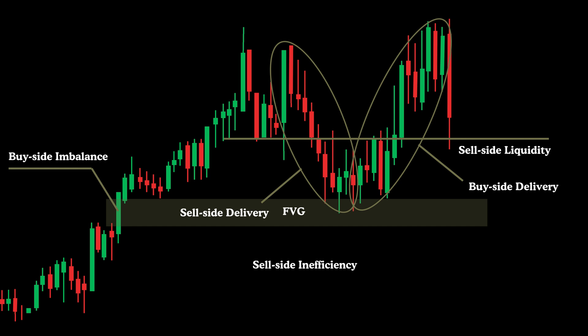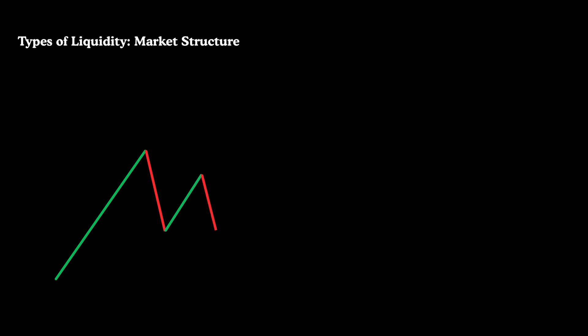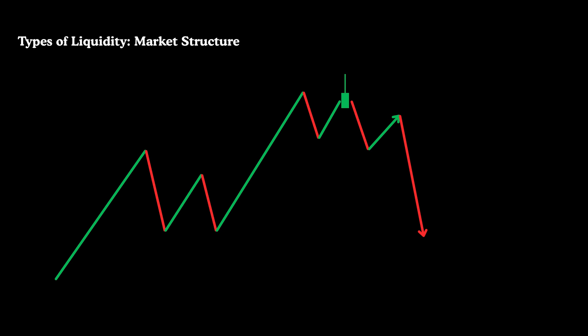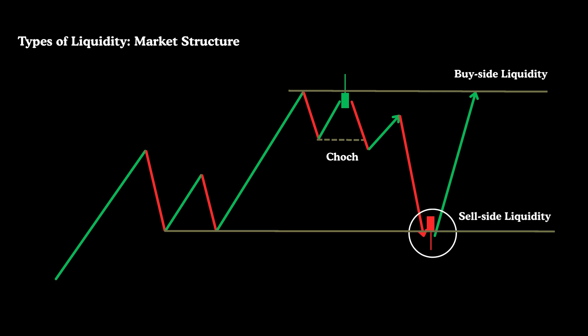Price often moves away from levels where liquidity has just been swept, whereas it tends to move towards zones that still contain liquidity. When sentiment leans bullish, the sell-side liquidity areas take on greater significance than the buy-side zones. A sweep below these lows often signals a potential bullish continuation and a favorable long opportunity aligned with the prevailing trend. However, if we observe a setup with a confirmed change in character, this liquidity area turns into a probable target. Price tends to be drawn towards zones rich in liquidity, increasing the likelihood of continued upward momentum.